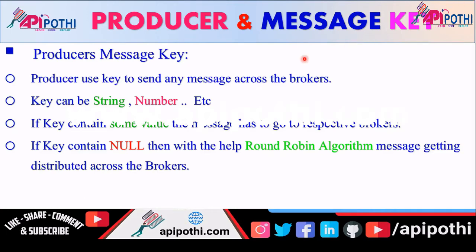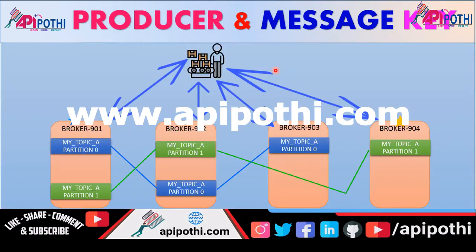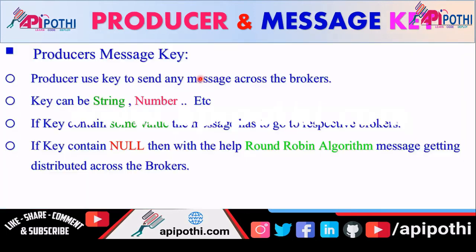Now, what is the producer message key? This is an important thing to understand. When a producer is producing data, we don't know exactly where the data will go. For that we need some identifier — that unique number is called the message key. With the help of the message key, data gets to the right place from the producer. The message key is a unique identifier that can be either a string, a number, or a combination of both.